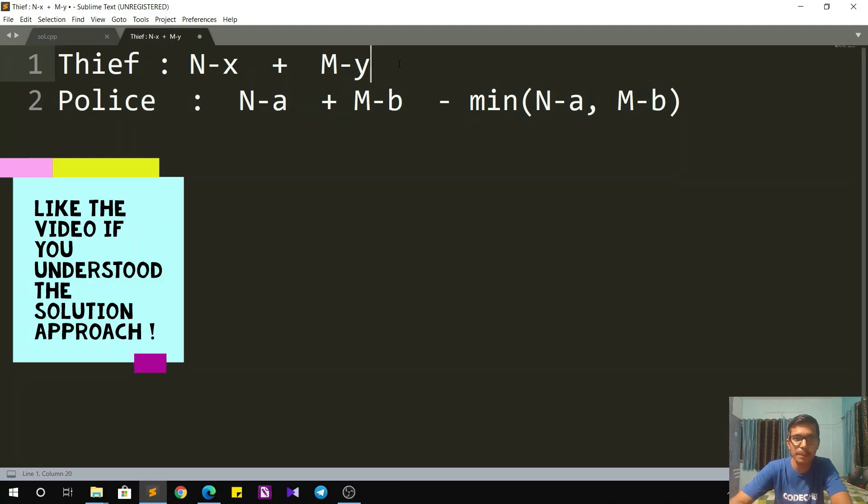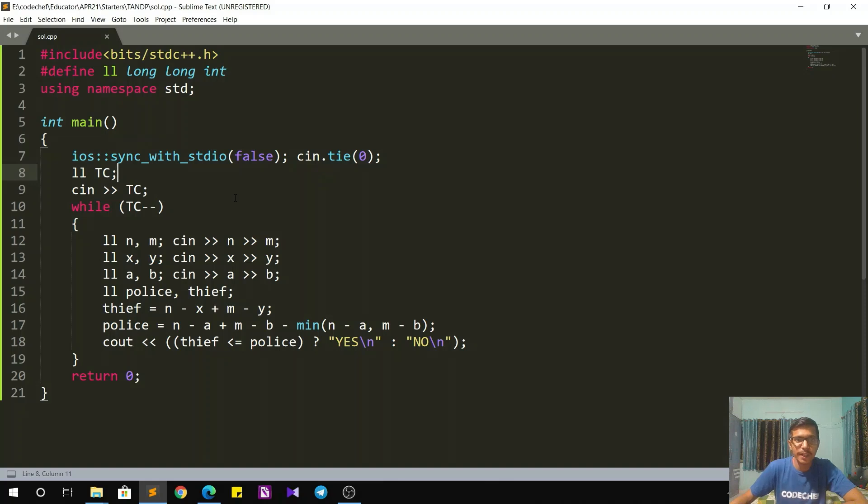Now let's quickly see the C++ implementation of the same. The implementation is pretty simple. For each test case, we take the input: N, M, X, Y, and A, B. Once we have the input, we calculate the time required for both of them to reach the target, the corner cell. The time taken by thief is N minus X plus M minus Y as discussed in the solution. It will be fixed always, whereas for police, it is N minus A plus M minus B, but we subtract the minimum of N minus A and M minus B because the police can make the moves of the type right plus down as well. Then we compare: if the thief reaches before or at the same time as police, the answer is yes, the thief can escape; otherwise the answer is no, the thief cannot escape. That completes the implementation.